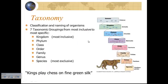Let's look at our more exclusive taxonomic categories. An easy way to remember them is the mnemonic: 'Kings play chess on fine green silk.' The first letters stand for Kingdom, Phylum, Class, Order, Family, Genus, and Species. Kingdom is the broadest or most inclusive category — it includes lots of different organisms. Species is the most exclusive or most specific. Interestingly, the words specific, special, and species all share the same root.